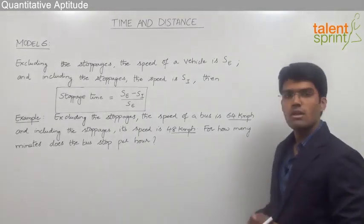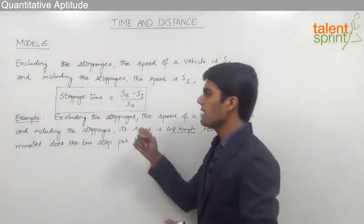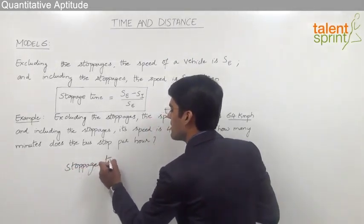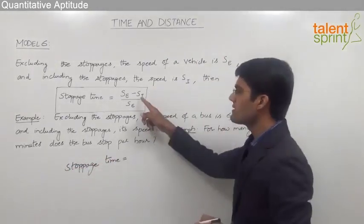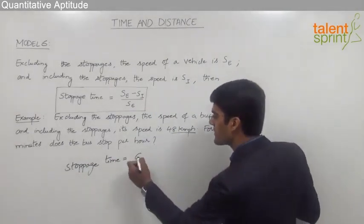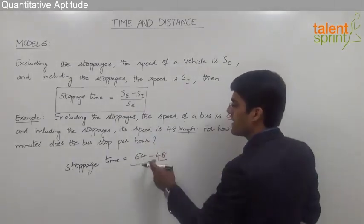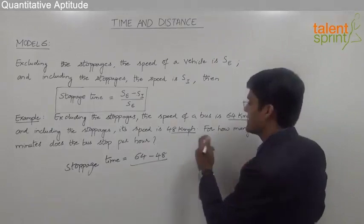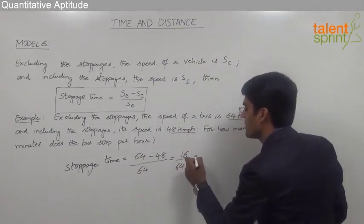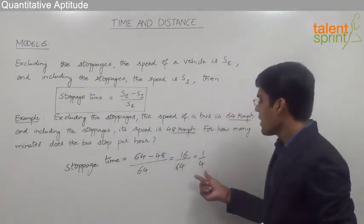We need to find out for how many minutes the bus stops per hour. Using the formula, stoppage time equals speed excluding stoppages minus speed including stoppages, divided by speed excluding stoppages: (64 minus 48) divided by 64, which is 16 by 64, equal to 1 by 4. So the stoppage time is 1/4.